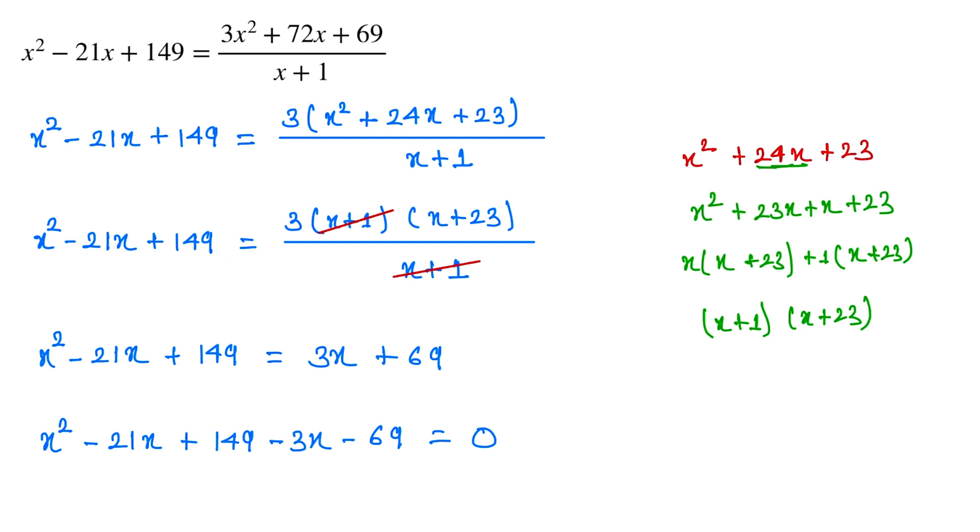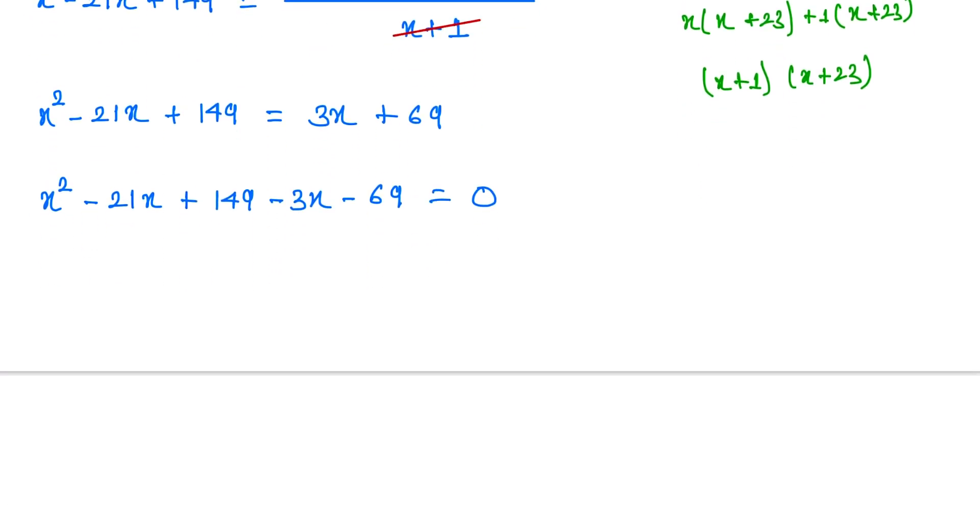Now we subtract this. So now we add this one: -24x + 149 - 69, so this one is +80 equals 0.